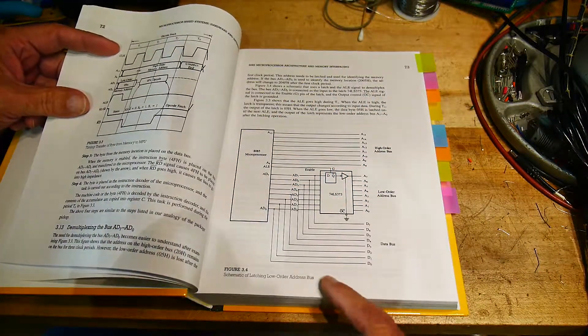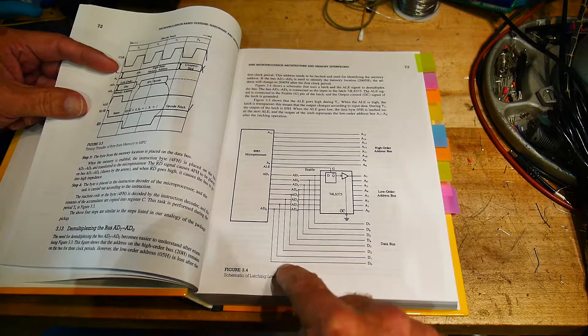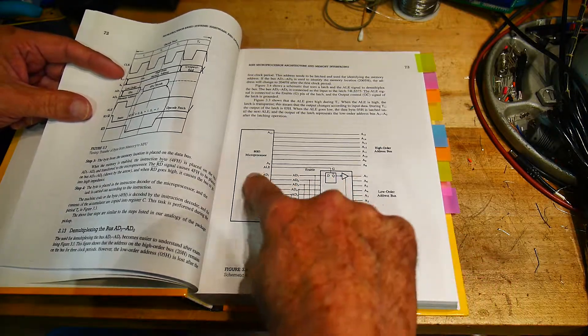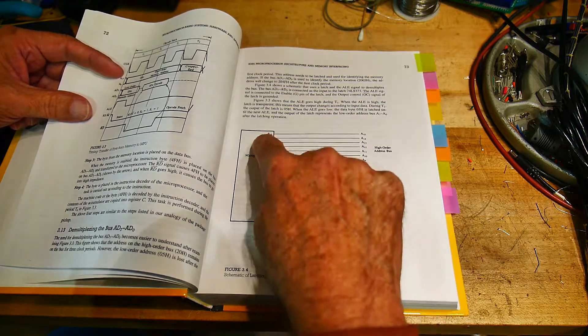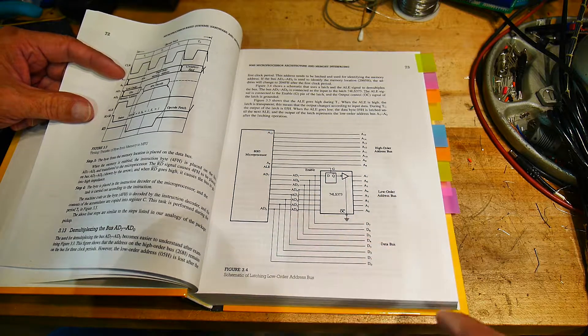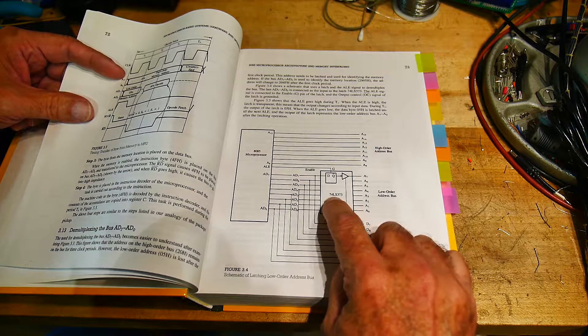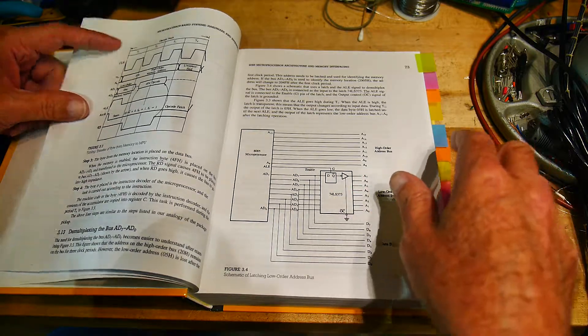In the beginning it talks about the architecture of the 8085. This should look familiar, demultiplexing the address lines. The lower eight lines of the processor are both address and data and you need to use something like a 373 or 573 to do the address decoding.